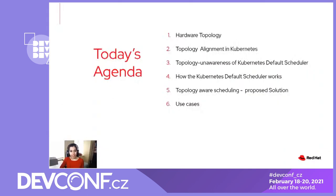Today's agenda includes hardware topology. I'll explain the term NUMA and why topology alignment is needed, how topology alignment can be achieved in Kubernetes. We're going to discuss topology unawareness of the Kubernetes default scheduler and try to understand what leads to that and how the default scheduler works. I'll also explain our proposal of enabling topology-aware scheduling, the key components proposed as well as the end-to-end working solution. I'll also talk about the current status, use cases, and wrap up by providing a few pointers for future reference.